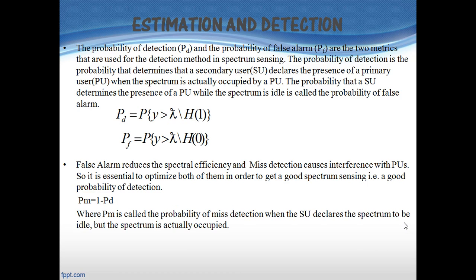The two main concepts behind the energy detection process are the null hypothesis H0 and the alternate hypothesis H1. Exactly one of H1 or H0 must be true, so there are generally two sources of error. One is detecting alternate when it is actually null, which is called false alarm. The other, more important type, is detecting null when it is actually alternate, which is called misdetection. False alarm reduces spectral efficiency and misdetection causes interference with primary users, so it is essential to optimize both.